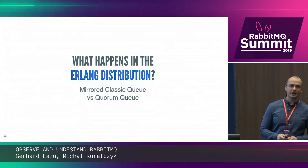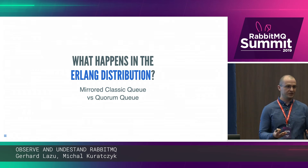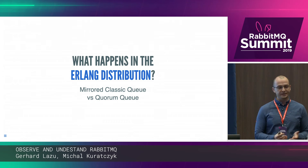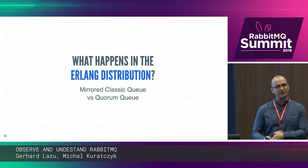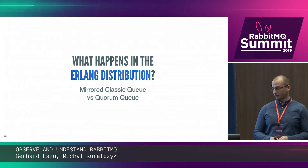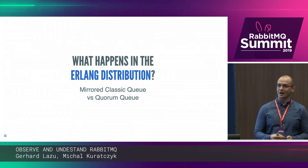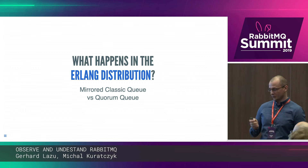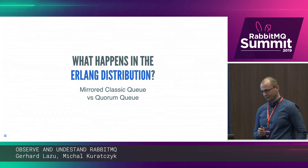One of the things that keeps coming up over the years in the RabbitMQ community is: what is happening when we're using mirrored queues? What is happening at a cluster level? What happens between the nodes? And also: what's happening with the quorum queues? How are they different? Can you show us the benefits? There is one very obvious benefit which I'll show you in the next couple of minutes.